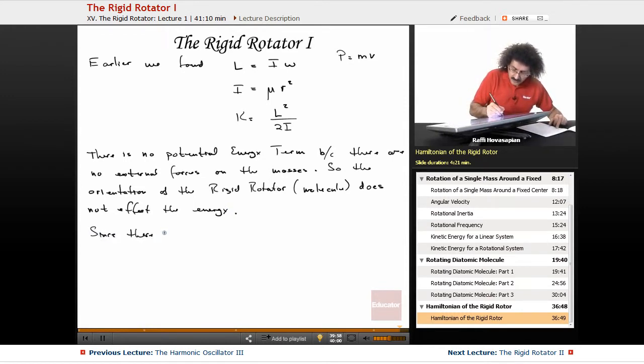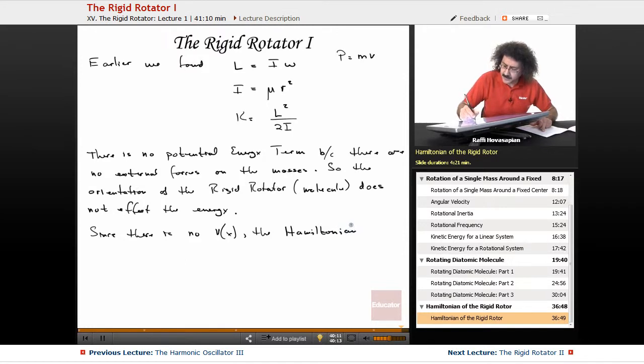Now, since there is no potential energy term, the Hamiltonian of the rigid rotator is just the kinetic energy operator.